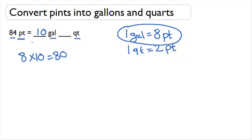Now if I started off with 84 pints and I'm using 80 of them to make ten gallons, I'm going to subtract 84 minus 80 to find out how many pints I have left. This gives me four pints.